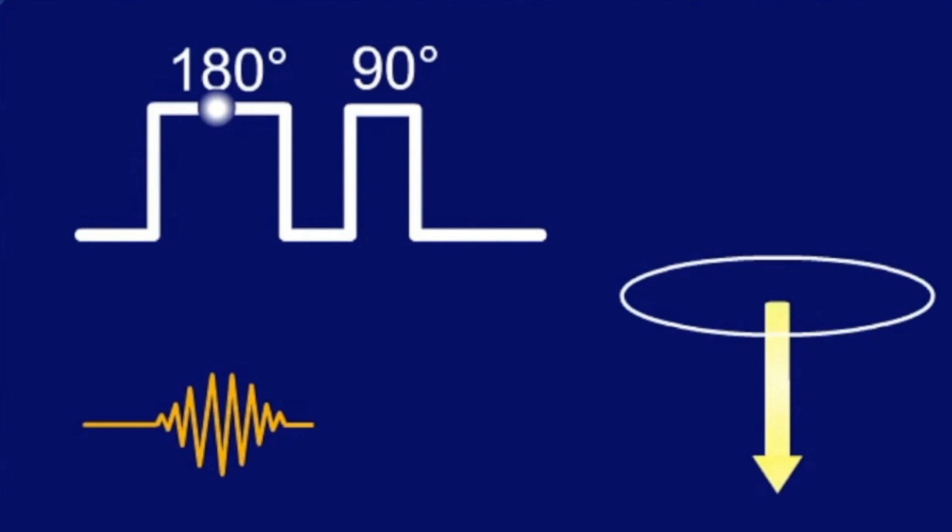If we do not do anything else, the longitudinal magnetization will slowly go back up, like a ball that is thrown into water. To get a measurable signal, however, we need some transversal magnetization.